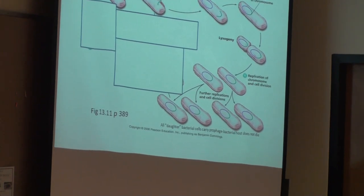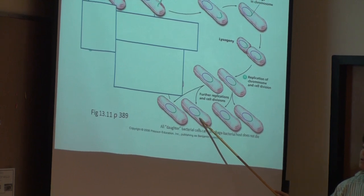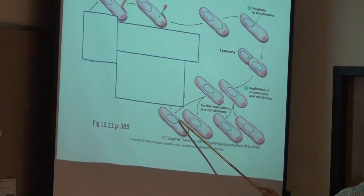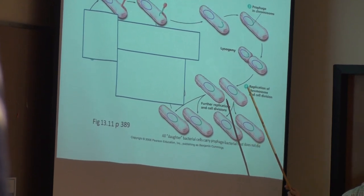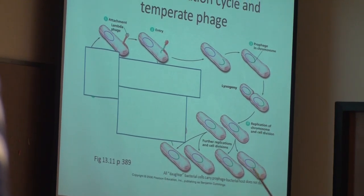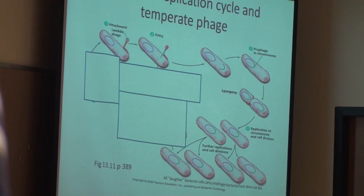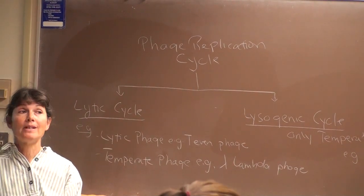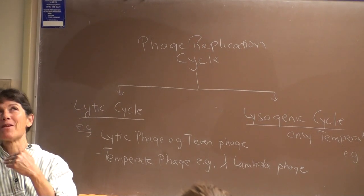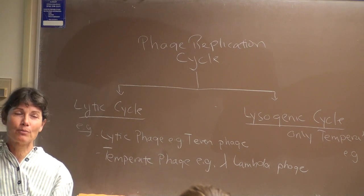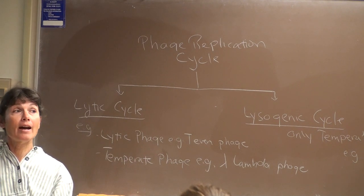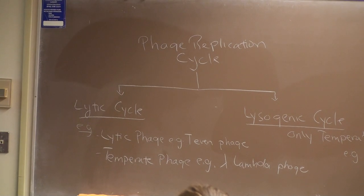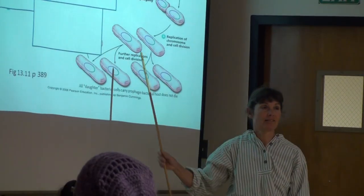In the lysogenic cycle we don't get replication of new infectious bacteriophage, but the phage genetic information is being replicated. The lysogenic cycle is maintained as long as the phage repressor protein is present. If the phage repressor protein is destroyed, the phage will undergo what's called induction — it will cut itself out of the chromosome and trigger the lytic cycle.